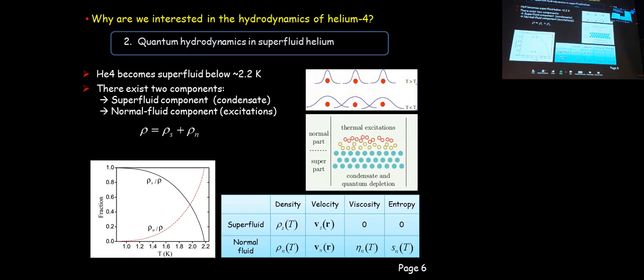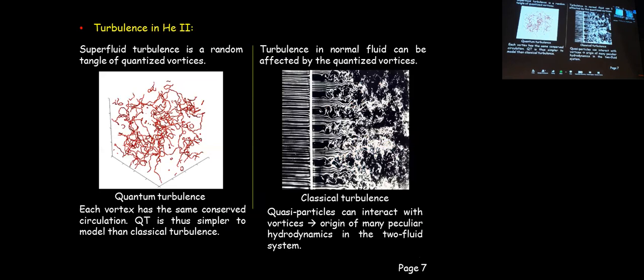Another reason we're interested is the fascinating quantum hydrodynamics in the superfluid phase. When liquid helium-4 is cooled below about 2.2 K at saturated vapor pressure, it undergoes a phase transition to the superfluid phase. Phenomenologically, there are two fluid components: the superfluid component, which is essentially the condensate, and the normal component, which is the thermal excitation on top of the condensate. The total density is the sum of both, nearly temperature-independent, but the fraction of each component depends strongly on temperature. Below about 1 K, there is essentially no normal fluid. Normal fluid has viscosity and entropy, but the superfluid has no viscosity and no entropy.